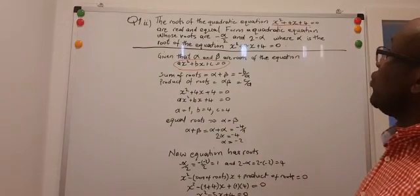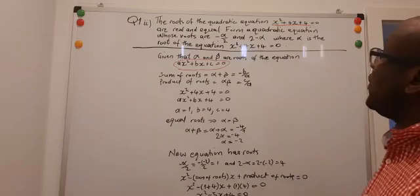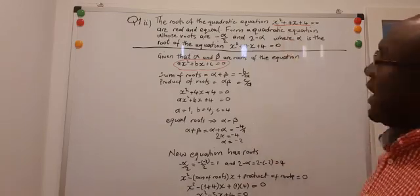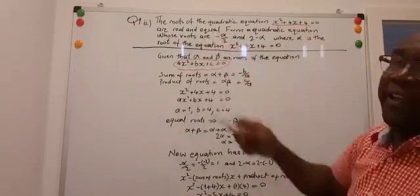Form a quadratic equation whose roots are -α/2 and 2 - α, where α is the root of the equation. Of course, we have only one root for this equation because we are told they are real and equal.